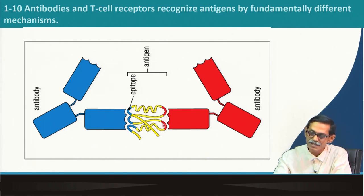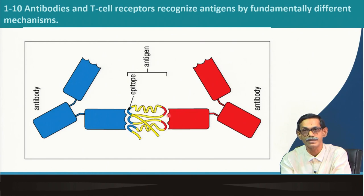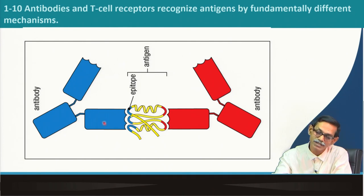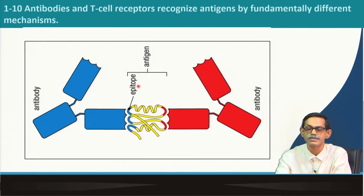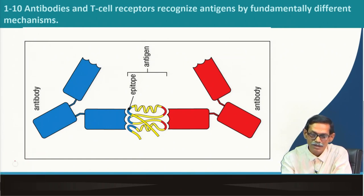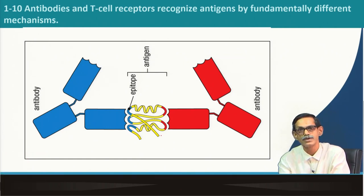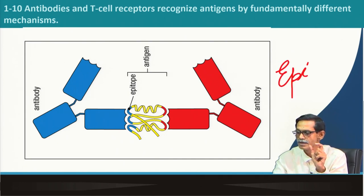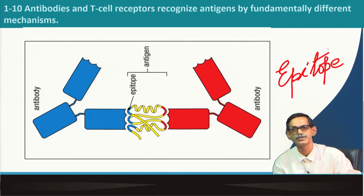In the same way, the red part of another antigen molecule is interacting with a different antibody. These two parts are completely different — two antibodies recognizing two different parts of an antigen. If the whole molecule is the antigen, the part of the antigen which is recognized by the antibody is known as the epitope. The blue or the red part — that specific segment — is the epitope.